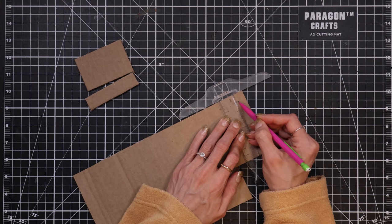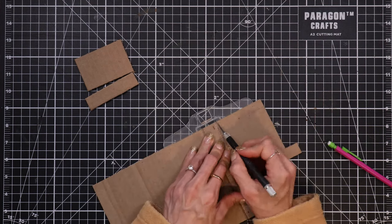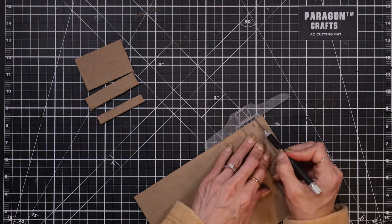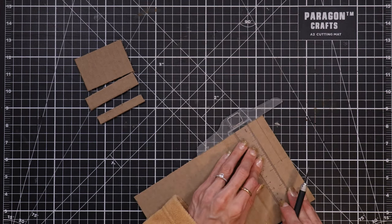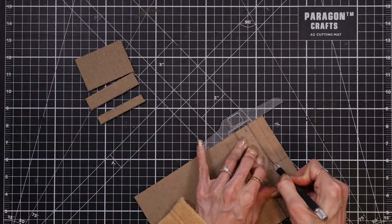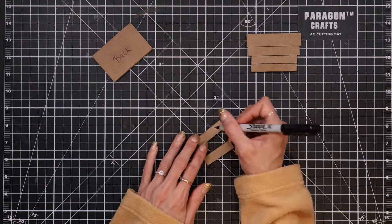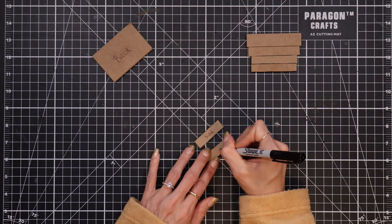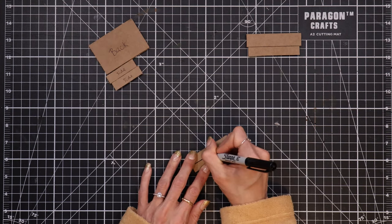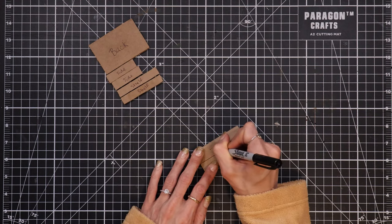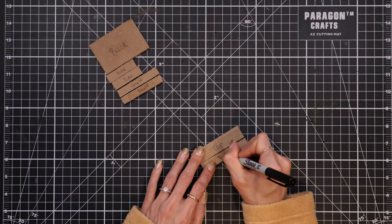I'm using an exacto knife to cut these out, but if you don't have one, you can always use scissors, or if you have a box cutter, that would also work really well. After those are cut out, I label each piece so I have a visual that I have everything that I need. This is probably an unnecessary step as I end up covering these with a page from the magazine, but it helps my brain nonetheless.